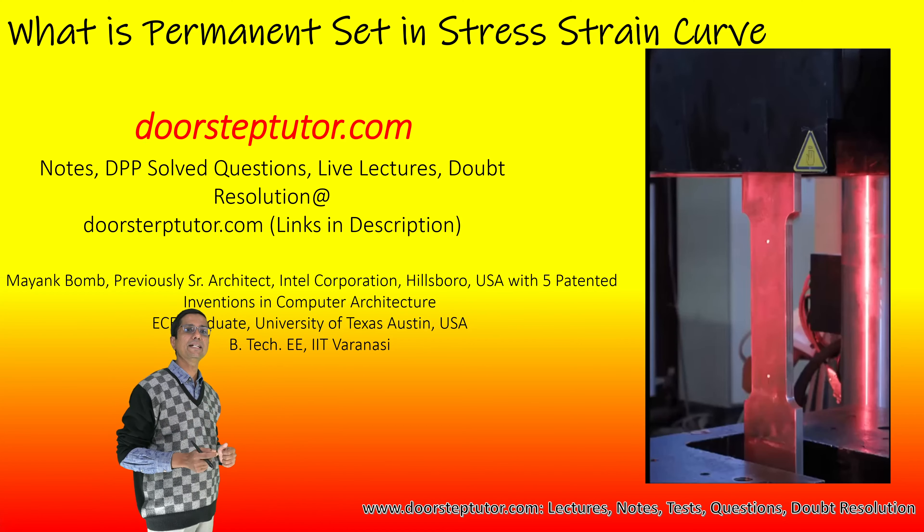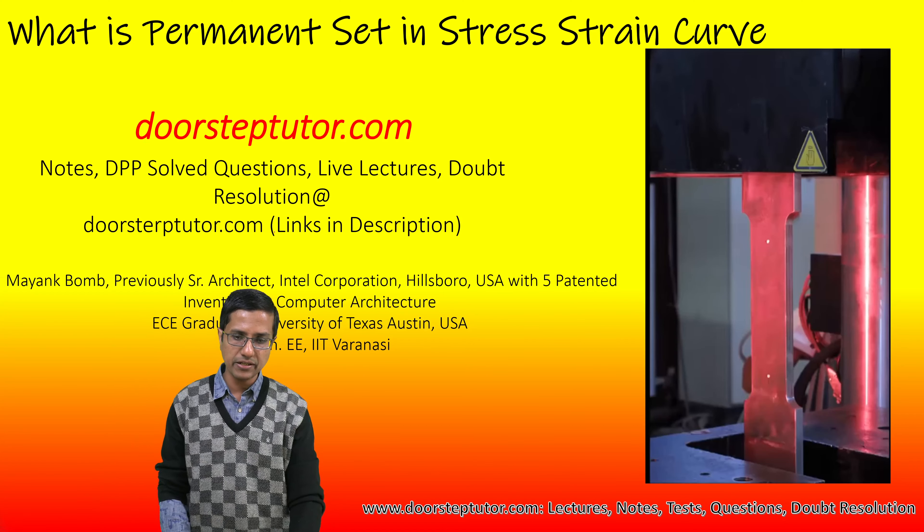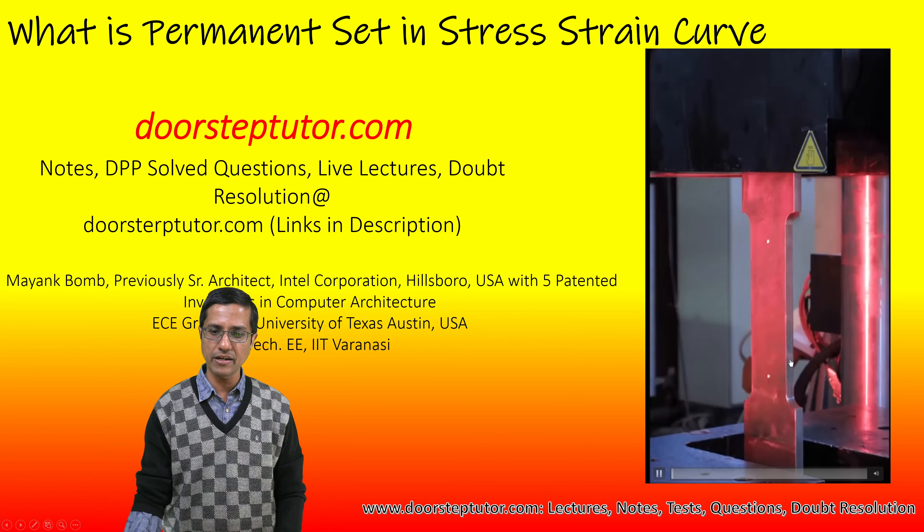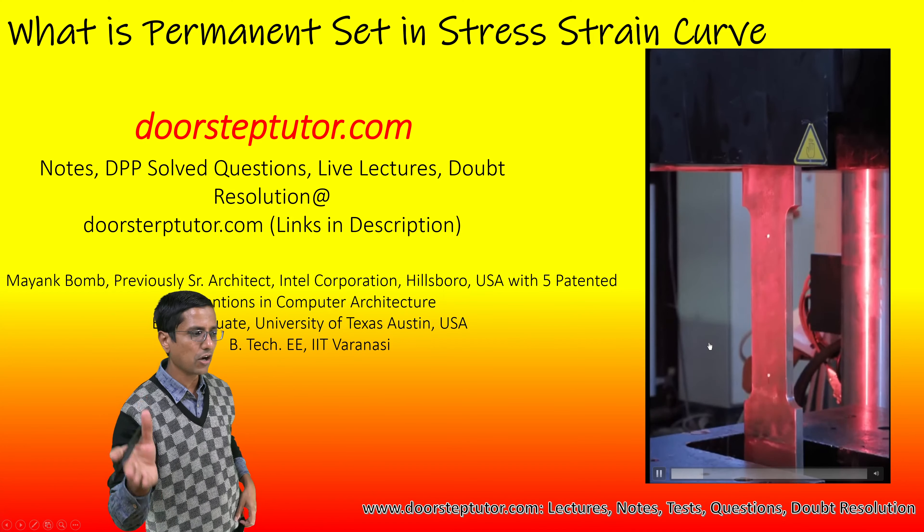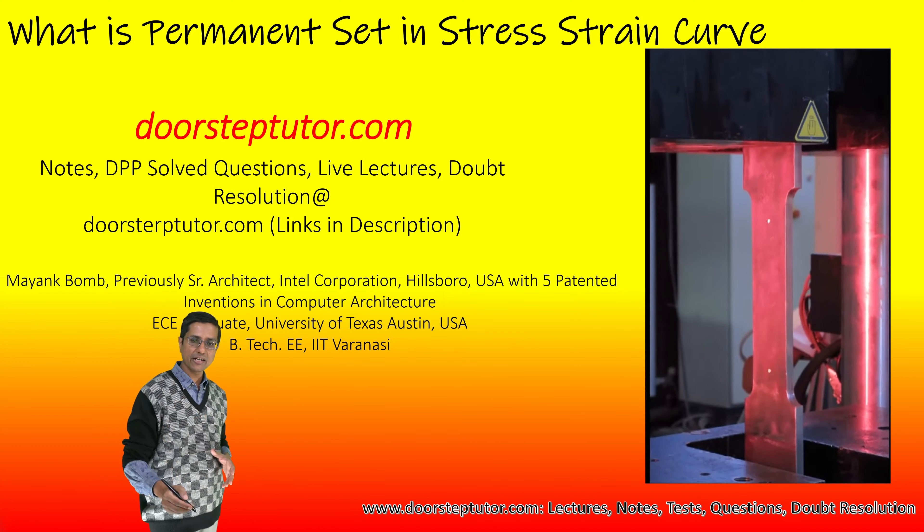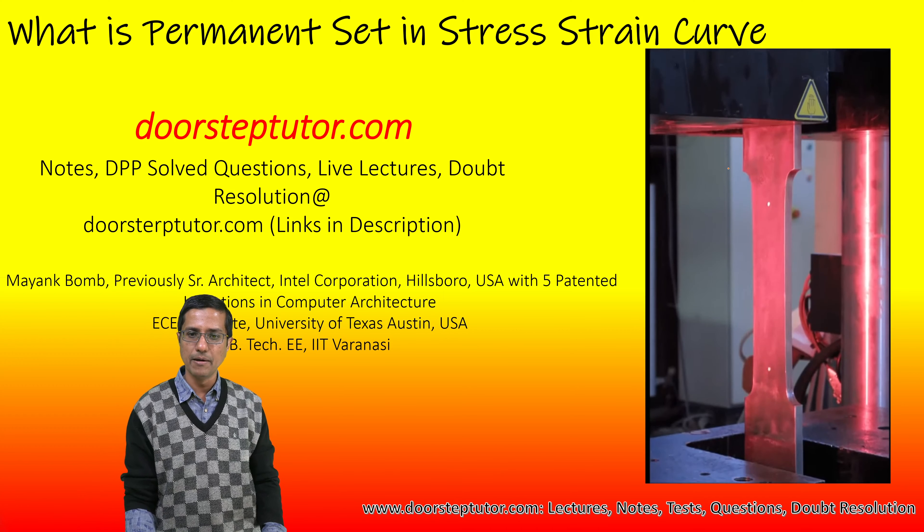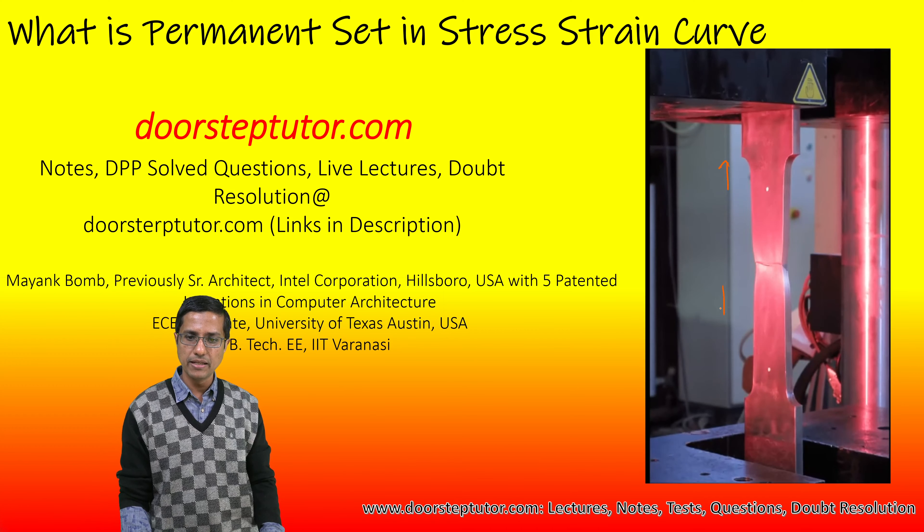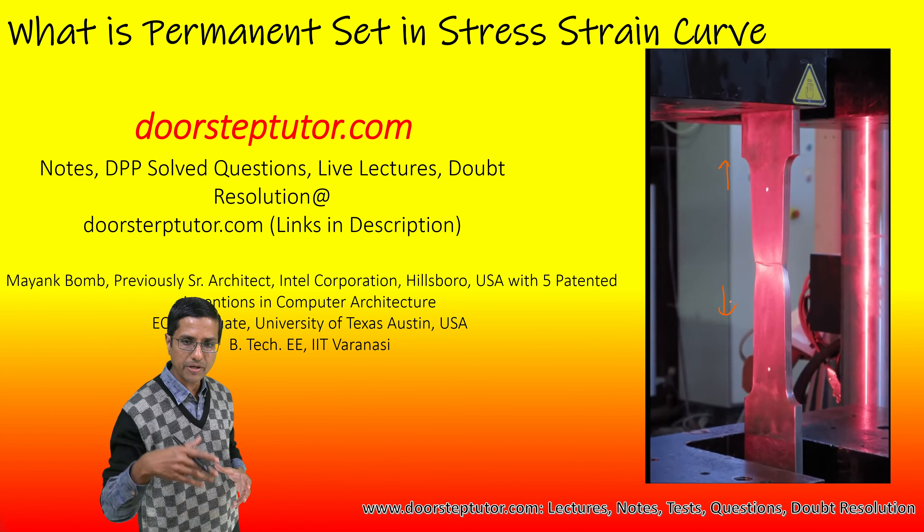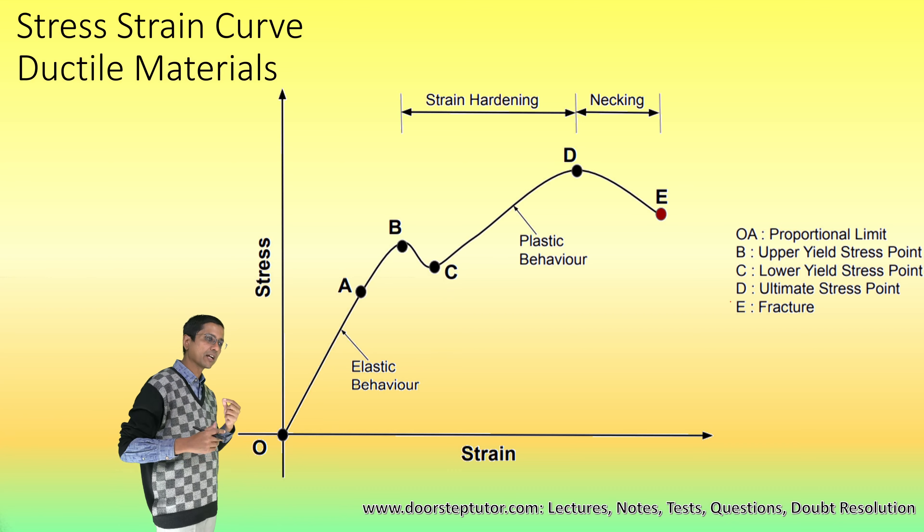What do we mean by permanent set when we are talking with reference to the stress-strain curve? Here is how we arrive at the stress-strain curve. We are straining this metal rod, this metal bar, and because of which certain strain is developed and then finally it breaks. That is what we are talking about when we are looking at the stress-strain curve.